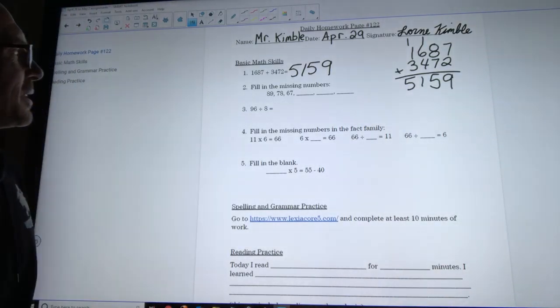Looking at our missing numbers here we have 89, 78, 67. When I look at these I say well each time it goes down and if I go down 10 from 89 that's 79 and then one more gets me 78. So that's down 11. And then 78 minus 10 is 68 plus another one off or minus another one off I should say is 67. So it looks like we're subtracting 11 each time.